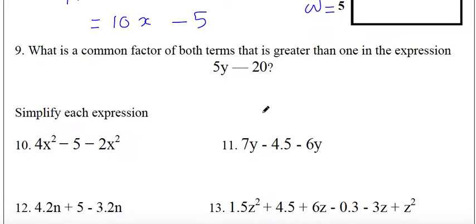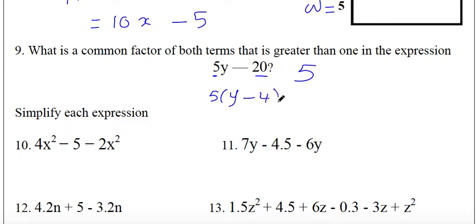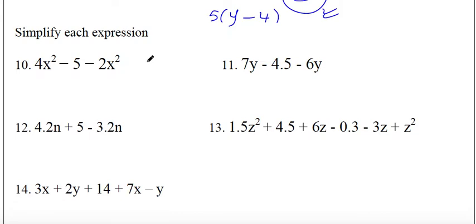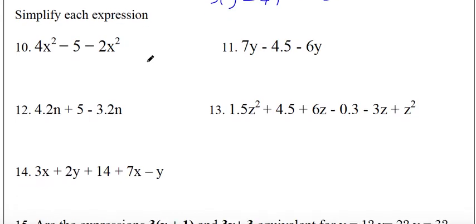Question ten: what is a common factor of both terms greater than one in the expression 5y minus 20? Which number can divide both 20 and 5y? It is 5, because we can take 5 as a common factor and write 5 times (y minus 4). The answer is 5, the common factor.